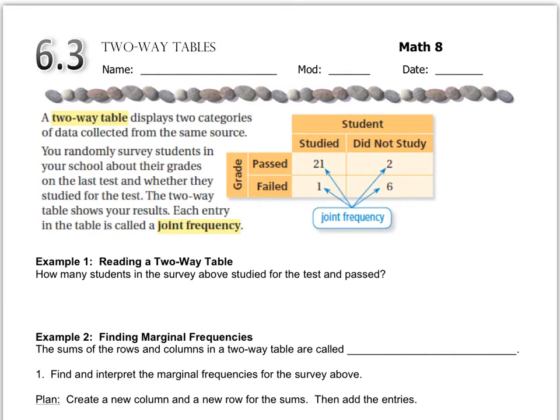Now, a bit of vocab: we have something called a joint frequency, and a joint frequency are the numbers that are inside the table. So 21 people passed and studied, two people passed and didn't study, one person failed and studied, so that's kind of unfortunate for them, and six people failed and didn't study. These numbers inside the table are called joint frequencies.